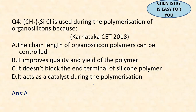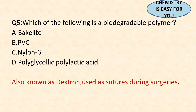Question 4: (CH₃)₃SiCl is used during the polymerization of organosilicons because the chain length of organosilicon polymers can be controlled by adding this compound. It does not act as a catalyst, does not block the terminal end, or improve quality — it is used solely to control the length of the organosilicon polymer during polymerization to get the desired product.